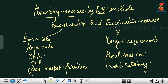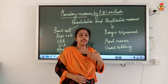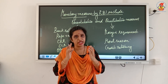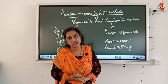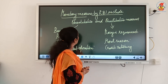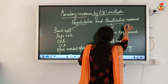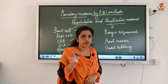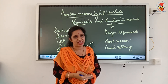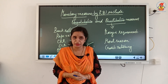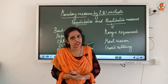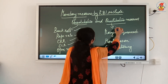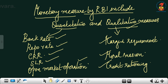Monetary measures are taken by the RBI — Reserve Bank of India — and this is the same as what was covered in the money and banking chapter. Monetary measures include quantitative and qualitative measures. Quantitative measures include bank rate, repo rate, cash reserve ratio (CRR), statutory liquidity ratio (SLR), and open market operations. A detailed discussion is given in the money and banking chapter.